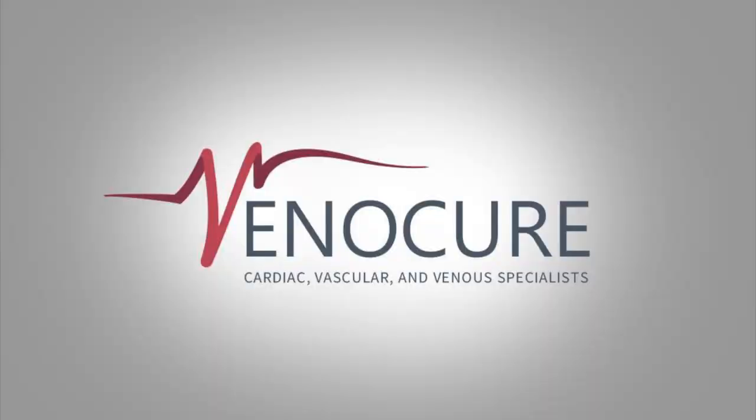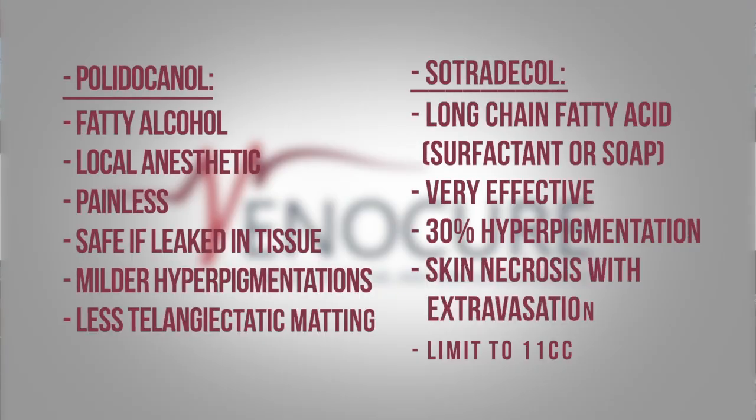In the next presentation I'm going to show you briefly what sclerotherapy is all about. The two most common agents in the US and actually the world right now are polidocanol and sodium tetradecyl sulfate (STS). Polidocanol is a fatty alcohol — as I call it, it's basically a local anesthetic; that's how it was invented in the 1950s. It has much less pain even if it leaks into the tissue, and it causes less pigmentation than STS.